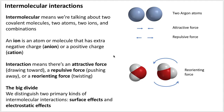Hello, this is Professor Neshiba, and I'm here to talk to you about intermolecular interactions. This first slide defines some terms. Intermolecular means we're talking about two different covalent molecules, two atoms, or two ions. An ion is an atom or molecule that has an extra negative charge, in which case we call it an anion, or an extra positive charge, in which case we call it a cation.